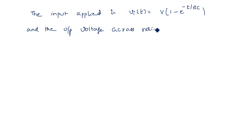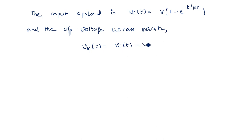The output voltage is taken across the resistor in the high-pass RC circuit, so we write V_R(t) or V_out(t). This equals V_i(t) minus V_C(t), since the total input voltage equals the voltage across the capacitor plus the voltage across the resistor. Rewriting: V_R(t) = V_i(t) - V_C(t). We know V_i(t) from the input equation, and now we need V_C(t).